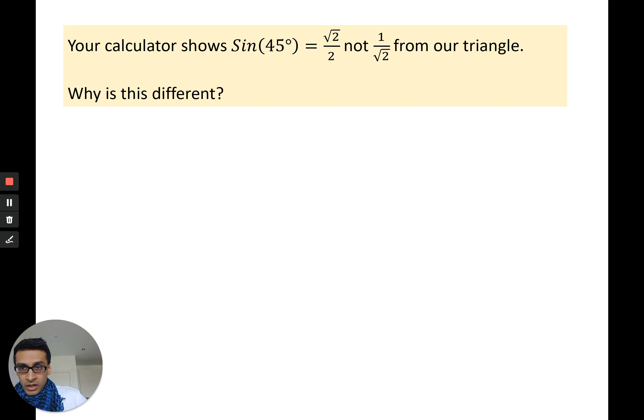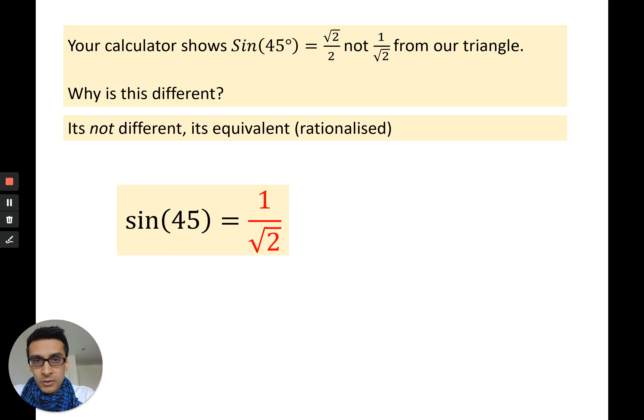Why is that different? Well, your calculator will rationalize your answer always. So it's not actually different, it's equivalent. You need to be aware of this whenever we do this topic, especially in tests or exams and revision guides. They show what might look like different values than what you have revised, but they are actually the same. You just have to remember to rationalize. Sine 45 is 1 over root 2 according to our triangle. If I multiply that by root 2 over root 2, I get root 2 over 2.